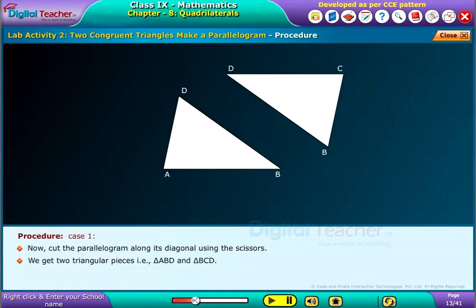We get two triangular pieces, that is triangle ABD and triangle BCD.